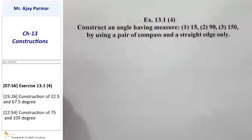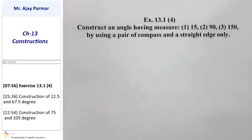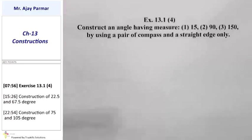Exercise 13.1, question number 4. Here we are expected to draw three different angles: 15°, 90°, and 150°. Let us see how we draw 15° — it is nothing but the bisector of the 30° angle.